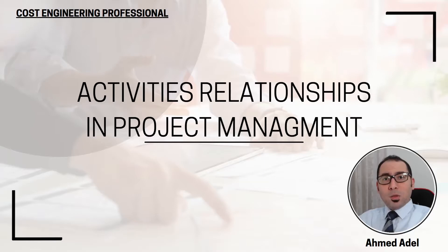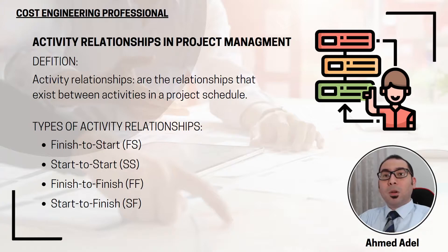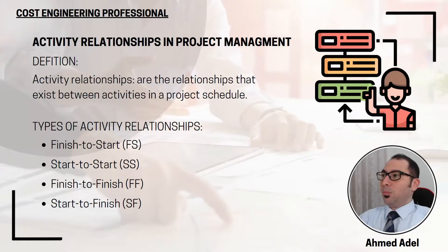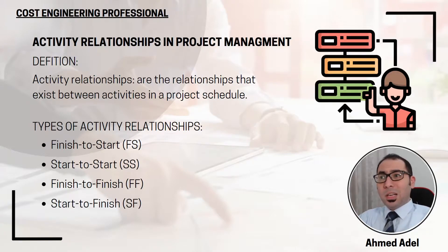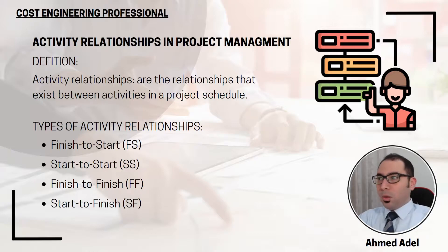We are going to be talking about activity relationships in planning and scheduling, or in project management. What is the definition of activity relationships? Activity relationships are the relationships that exist between activities in a project schedule.